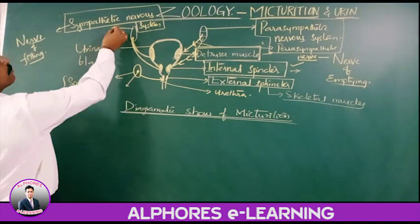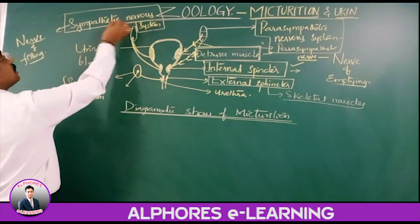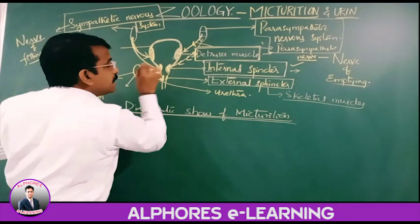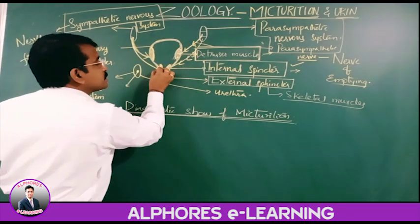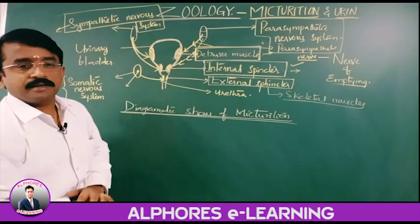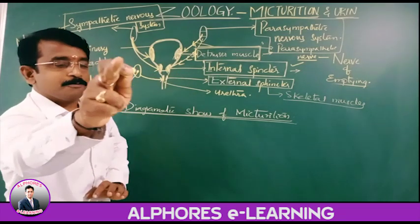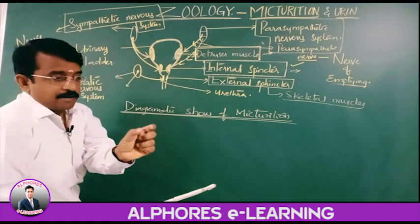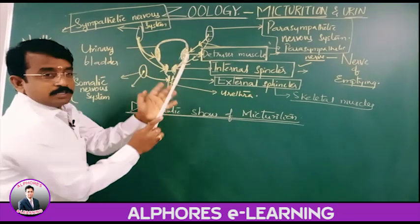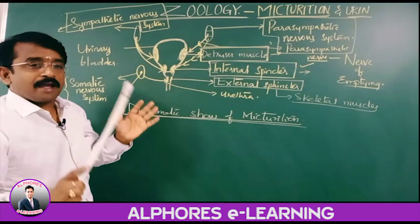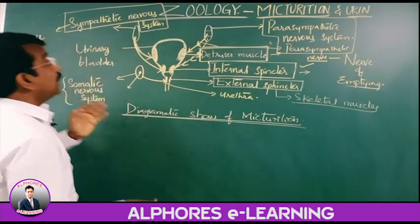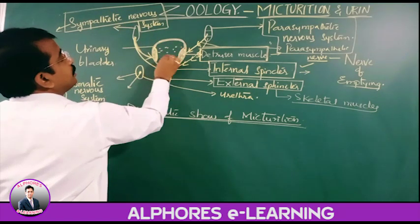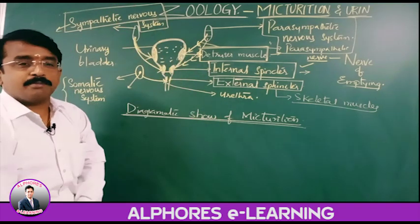At the same time, the sympathetic nerve sends the signal to the internal sphincter, which causes the contraction of the internal sphincter. So the internal sphincter contracts and the detrusor muscles relax, which means the urine goes on filling in the urinary bladder.